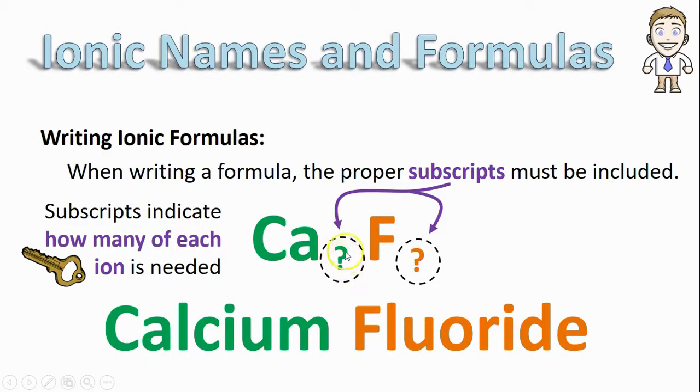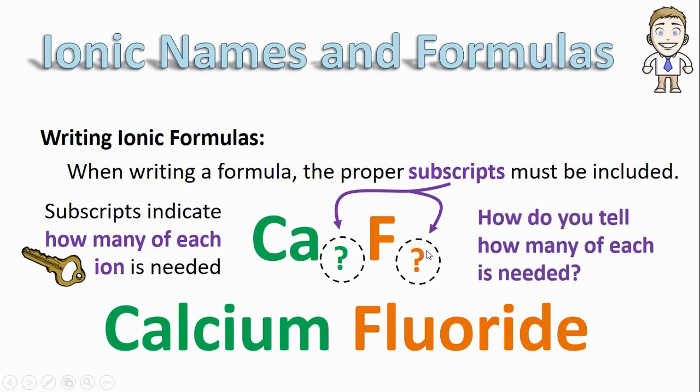So if I need three calciums, I put a three there. If I need two fluorides, I put a two there. The big question then for writing a proper formula is how are you supposed to tell how many of each ion is needed?